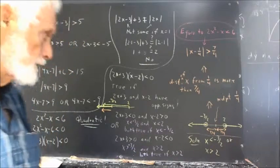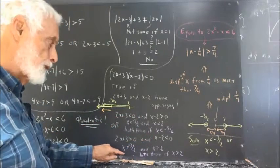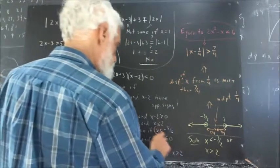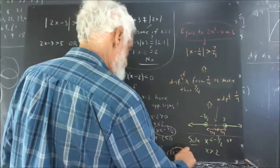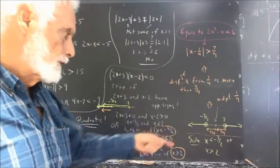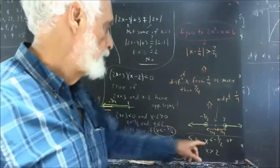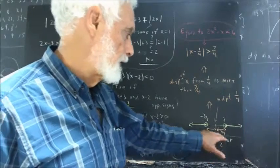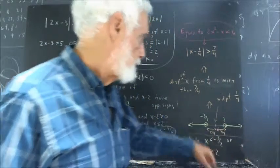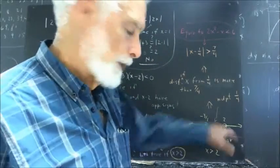So combining both cases, the solution is x less than negative 3 halves or x greater than 2. We can graph that: x less than negative 3 halves is one arrow pointing left, x greater than 2 is another arrow pointing right. We are excluding what is in the middle.